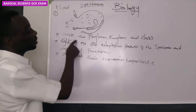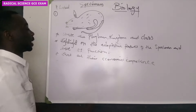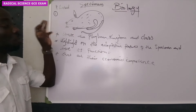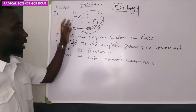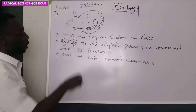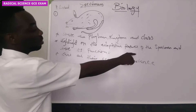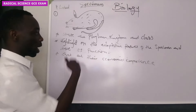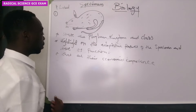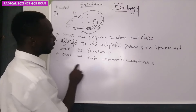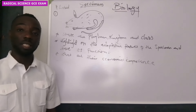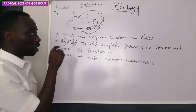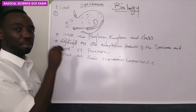This is another question. They said: state the phylum, kingdom, and class of the specimen. We are going to state the kingdom, phylum, and class of the animal drawn here. And they said: highlight the adaptive features of the specimen and state their functions. Also: what are the economic importance of this animal? These are the questions you should be expecting as far as this GCE exam is concerned.